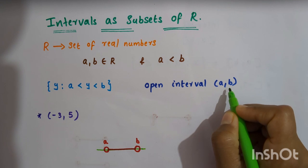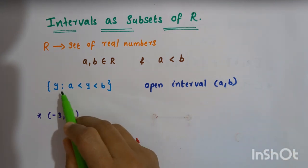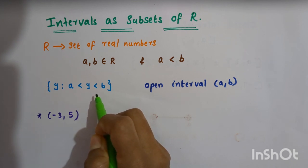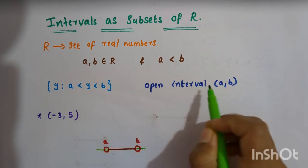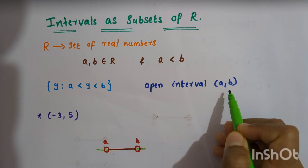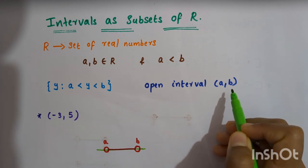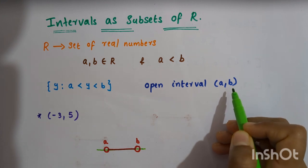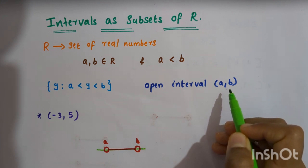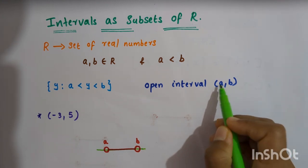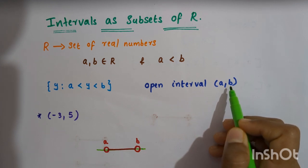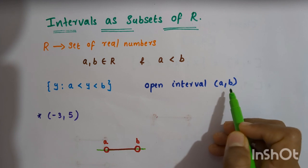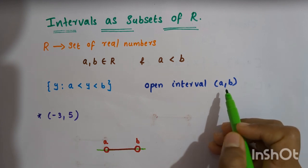That is, y is a real number which lies between a and b. All the points between a and b belong to this open interval (a, b), but a and b themselves do not belong to this interval. All the points between a and b will be there, but these two endpoints a and b do not belong to this interval, so we don't consider them.